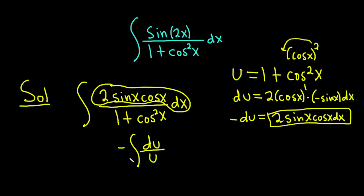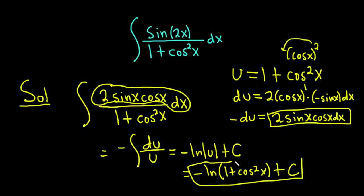And this is a familiar formula. This is equal to negative ln absolute value of u plus a constant. So this is equal to negative ln, and you can drop the absolute value because u is 1 plus cosine squared, so that's always going to be positive plus c. And that would be the answer to this indefinite integral.